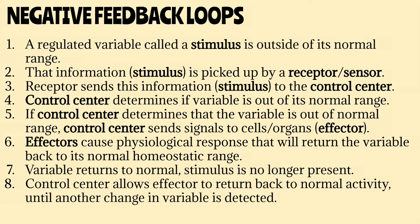So let's go over how negative feedback loops work step by step. When a regulated variable goes outside of its normal range, this is called a stimulus. This stimulus is detected by a cellular structure called a receptor. This receptor will then give this information to the control center. The control center will take the information and compare the current value of the variable to its normal set point. If the control center determines that the variable is out of its normal range, then it will send signals to the effector. The effector will initiate a physiological response to return the variable back to its normal homeostatic range. Once the variable gets back to normal, the control center lets the effector get back to its normal routine.